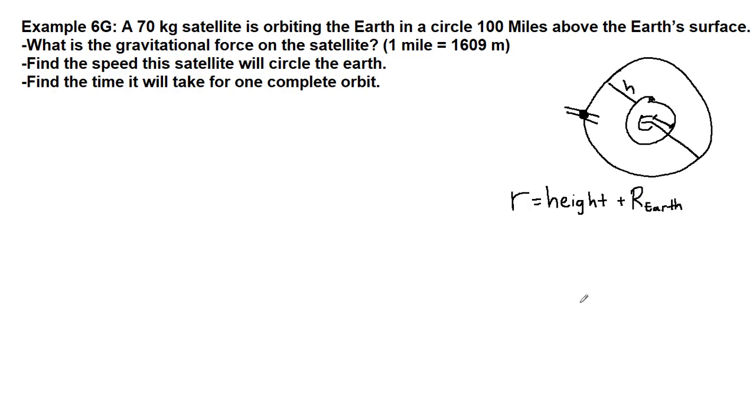And any situation that we're given, if we are orbiting the Moon or Jupiter or any other example that we come across, we need to make sure we recognize whether we are given the radius of the orbit or whether we are given the height above the surface of the object and then the radius of the object itself.